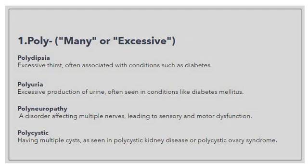Then we have 'polyuria'. Same concept here — 'poly' indicates excessive production of urine, often seen in conditions like diabetes mellitus. Both polydipsia and polyuria are common in diabetic patients: polydipsia means excessive thirst, and polyuria means excessive production of urine. Both are at an excessive level, that's why we use the prefix 'poly'.